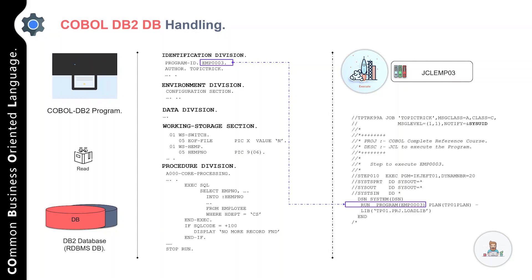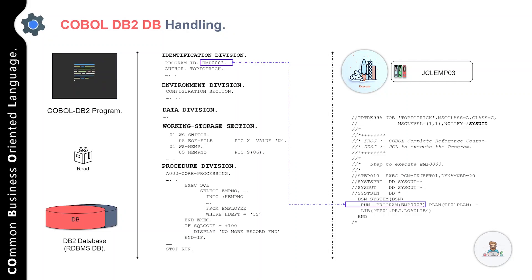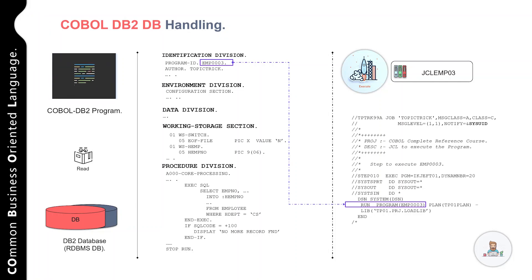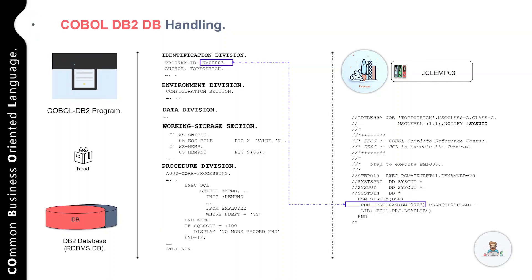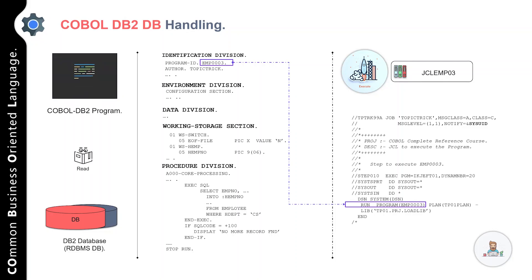Coming back to the sample JCL — JCLEMP03 — we have a job card, a description, and step 10, which executes the utility IKJEFT01, which is generally used to execute a COBOL DB2 program. In the SYSIN you can see that we have specified the program name followed by the plan and the library. This is how you execute your COBOL DB2 batch programs.